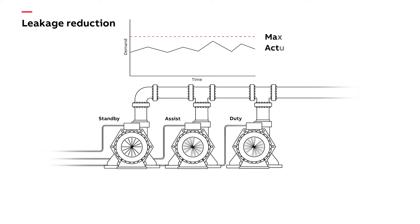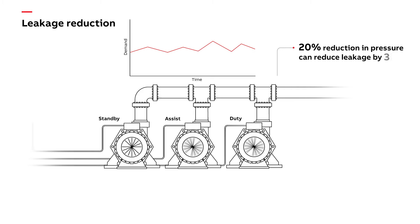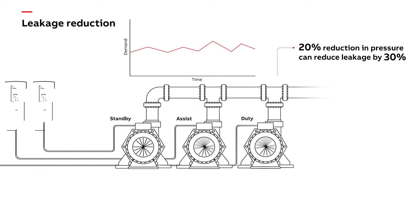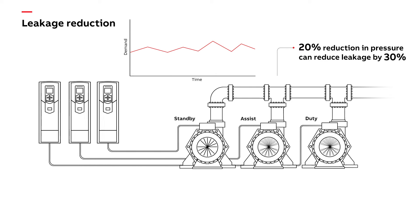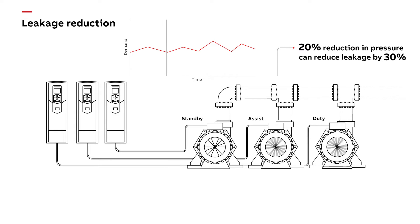If pressures varied by demand, the industry can reduce leakage significantly. Using variable speed drives, we can control the pressure of the system. With the variable speed drive, it's easy to change the output of the pump system to match the conditions.